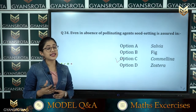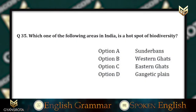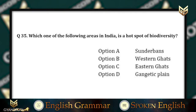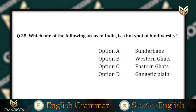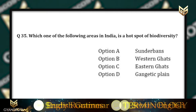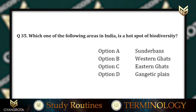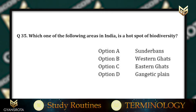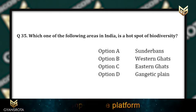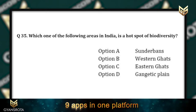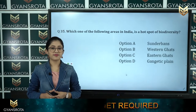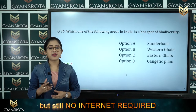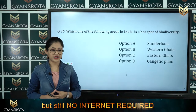Question 35: Which one of the following areas in India is a hotspot of biodiversity? Option A: Sundarbans, option B: Western Ghats, option C: Eastern Ghats, option D: Gangetic Plain. This is from the chapter Biodiversity and its Conservation.